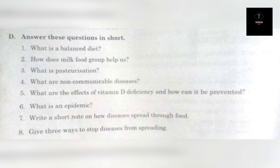Another question asks you to name three diseases for which vaccines are available. In Section D, there are longer questions such as: 'What is the balanced diet?' You need to write these answers in your notebook.